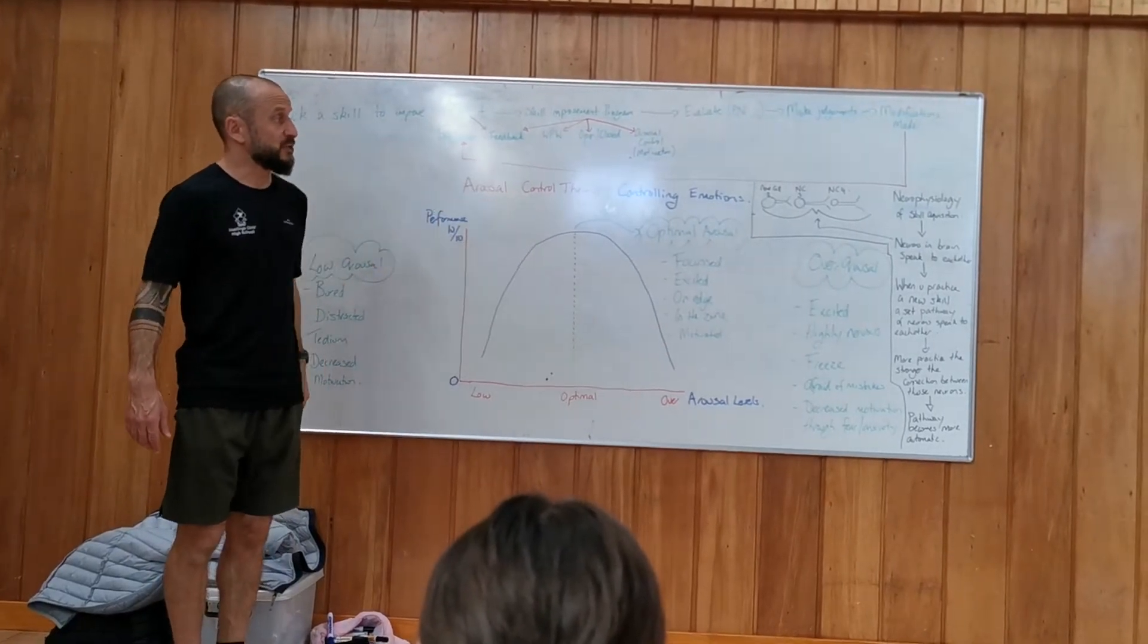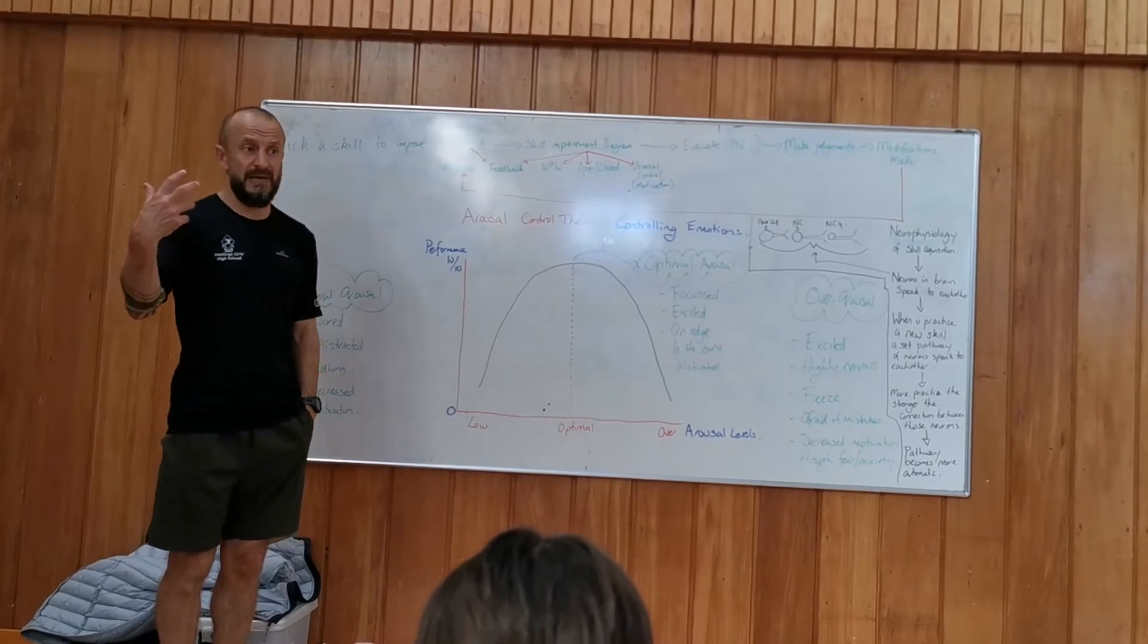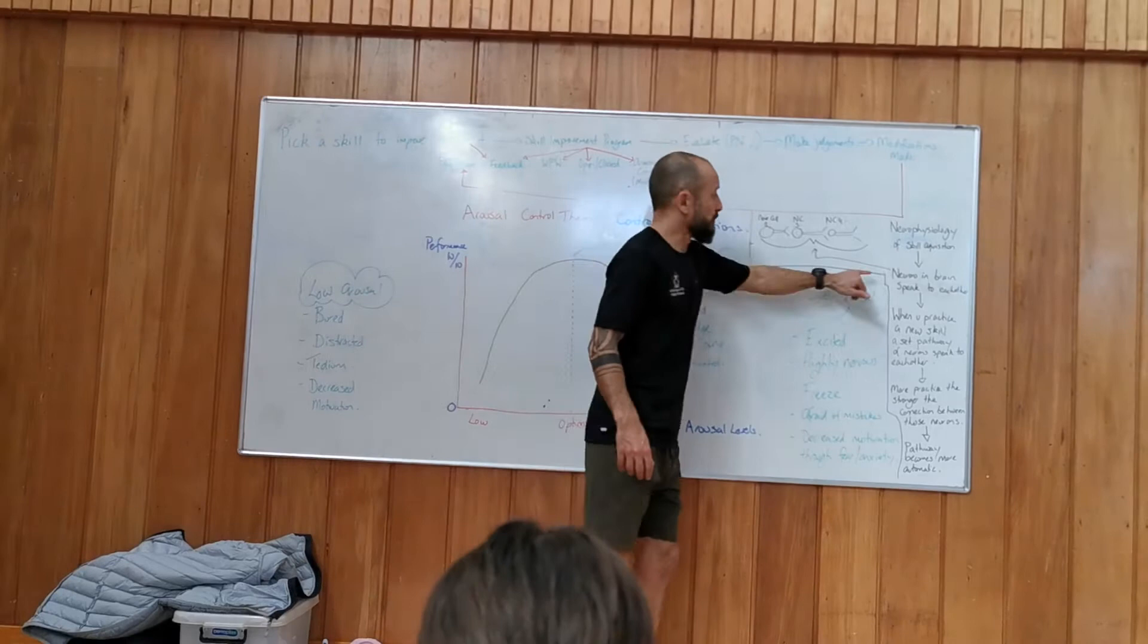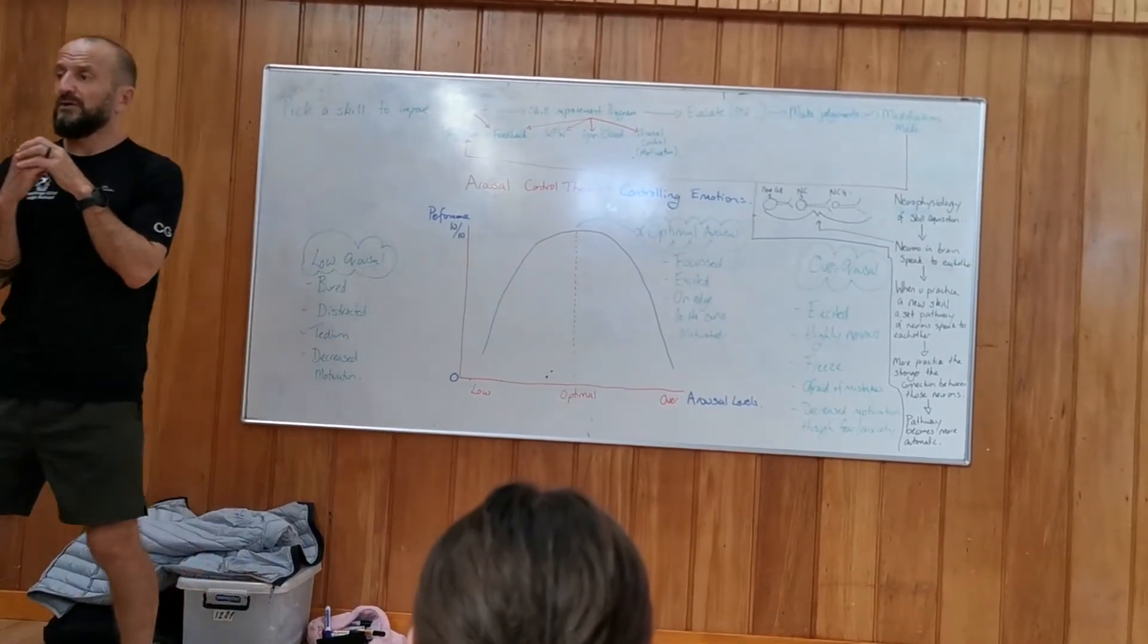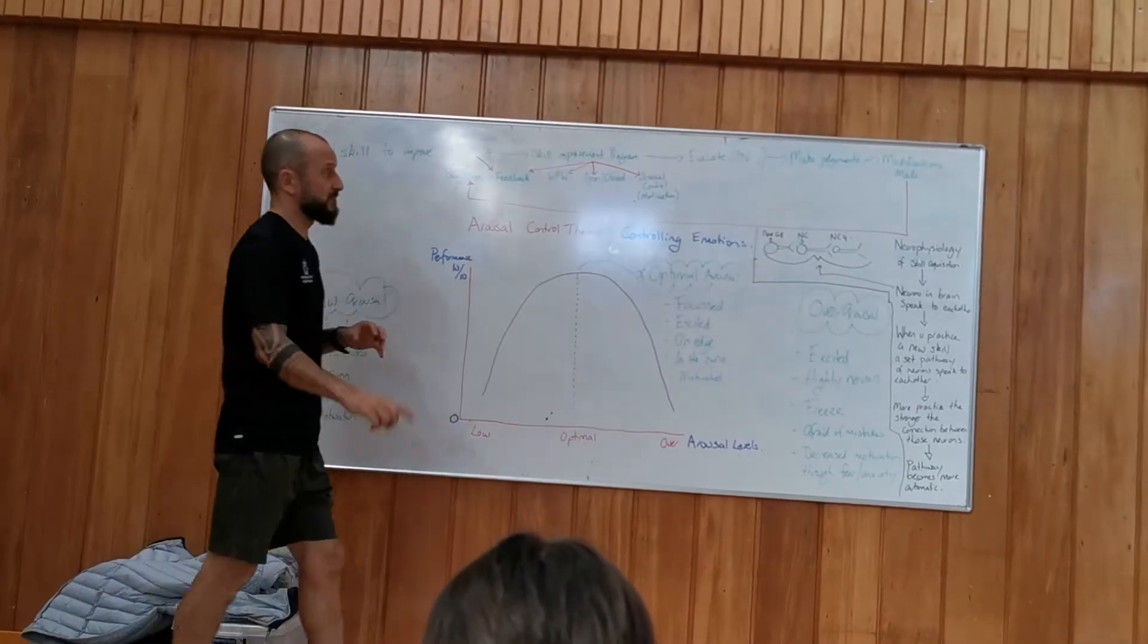But the neurophysiology of skill acquisition, skill acquisition means to obtain a skill or get a skill. So, your neurons in your brain are little cells. So, if you do biology, you'll know that cells have a nucleus and then they communicate to each other.